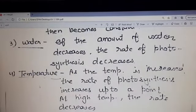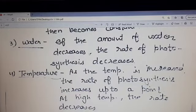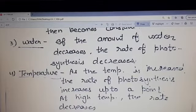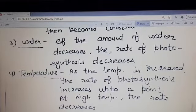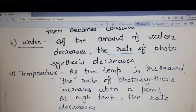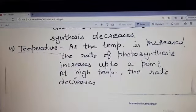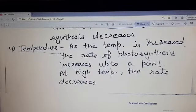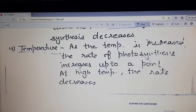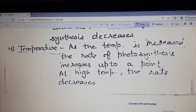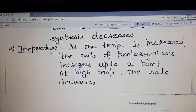If the amount of water decreases, then the rate of photosynthesis will also decrease. As the temperature is increased, the rate of photosynthesis will also increase up to a point. At a high temperature, the rate will decrease.